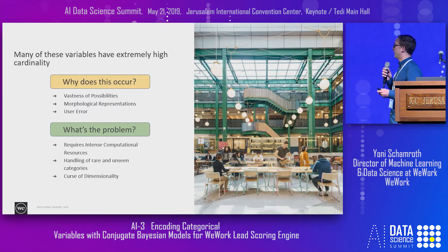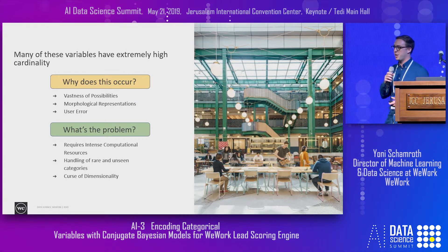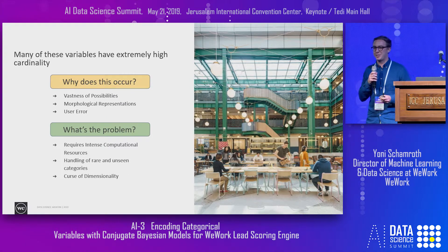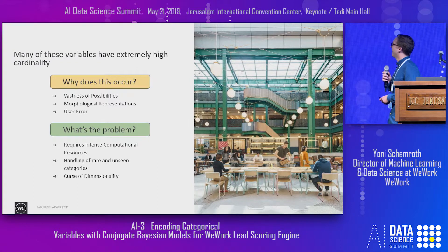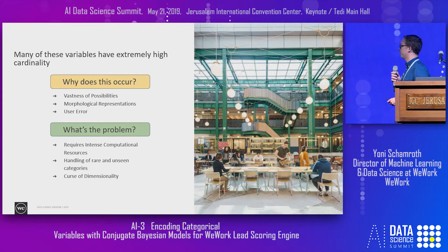There are also different morphological representations for the exact same entity. I'm from New York — there's New York City, NYC, Manhattan. I've noticed that here in Jerusalem there are about three names for just about everything. And if you have form input, which is really common, you can run into a lot of user error to add to the problem.